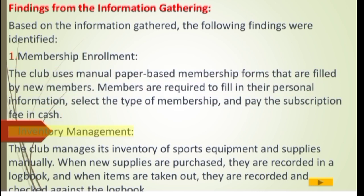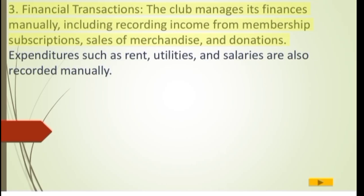Finding 1.2 — Inventory Management: the club manages its inventory of sports equipment and supplies manually. When new supplies are purchased, they are recorded in a logbook, and when items are taken out, they are recorded and checked against the logbook. Finding 3.3 — Financial Transactions: the club manages its finances manually, including recording income from membership subscriptions, sales of merchandise, and donations. Expenditures such as rent, utilities, and salaries are also recorded manually.